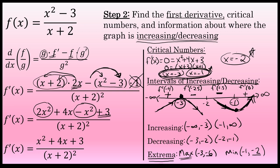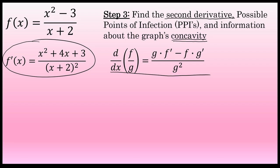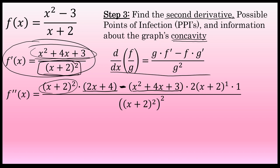Now I'll move on to step 3. The second derivative will give all the information needed about the graph's concavity — not where it's increasing and decreasing, but where the graph is concave up and where it's concave down. To find the second derivative, I'll apply the quotient rule again. The second derivative is: x plus 2 squared times the derivative of the numerator — the derivative of x squared plus 4x plus 3 is 2x plus 4 — minus x squared plus 4x plus 3 times the derivative of the denominator.